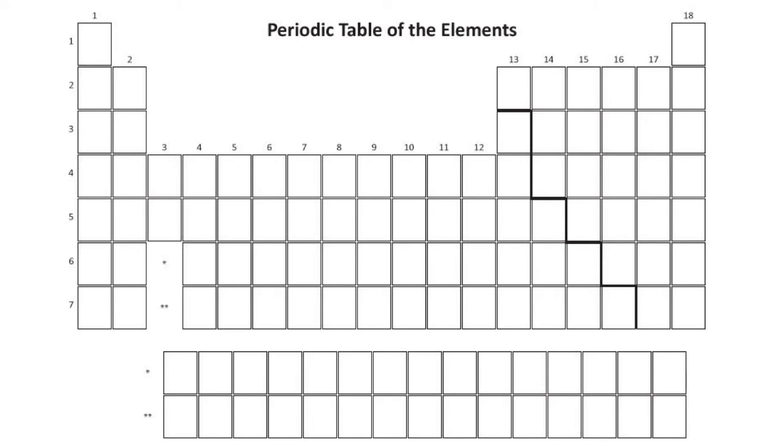Okay, so now let's talk about our families on the periodic table. We've got six main families that we want to take a look at. Those elements in group 1 are known as the alkali metals.